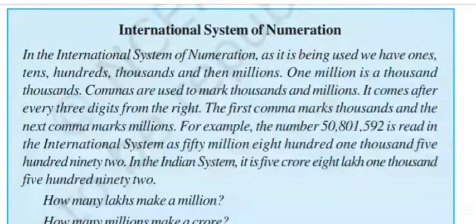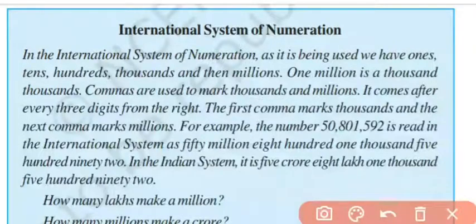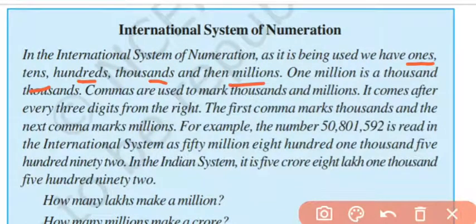In the International System of Numeration, we will talk about India and other countries internationally. Mostly, in the US and European countries, as it is being used, we have 1, 10, 100, 1000, and then millions.